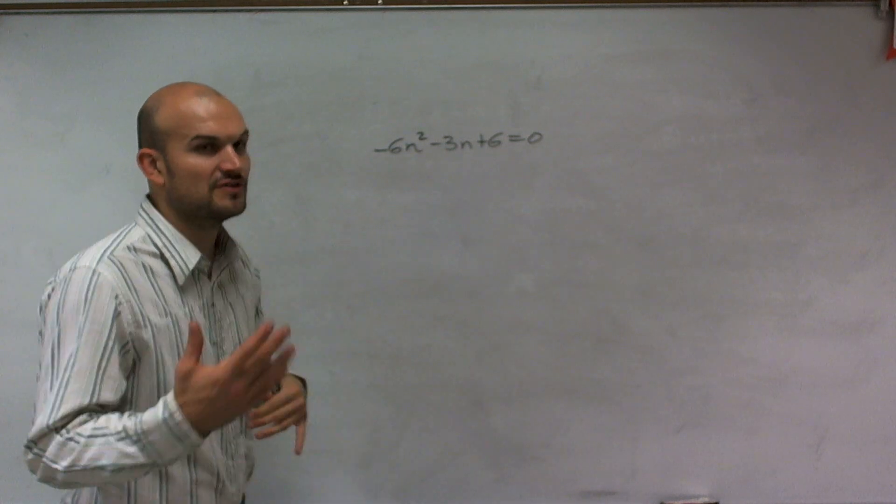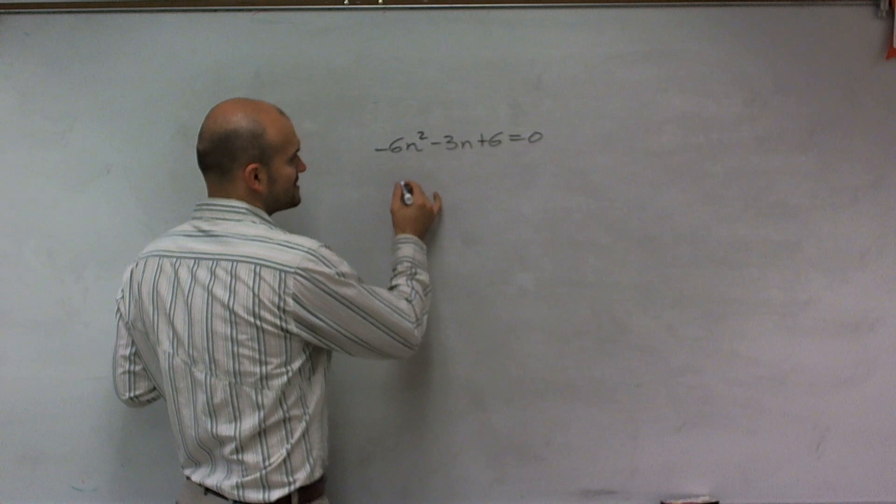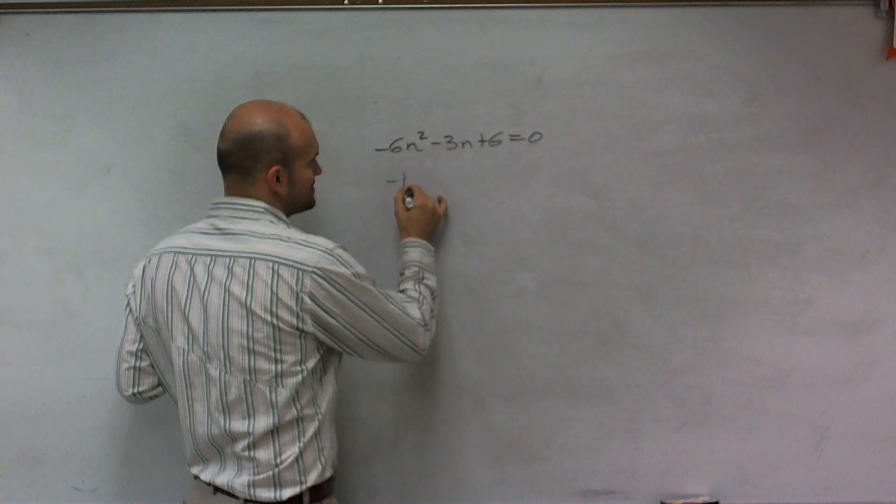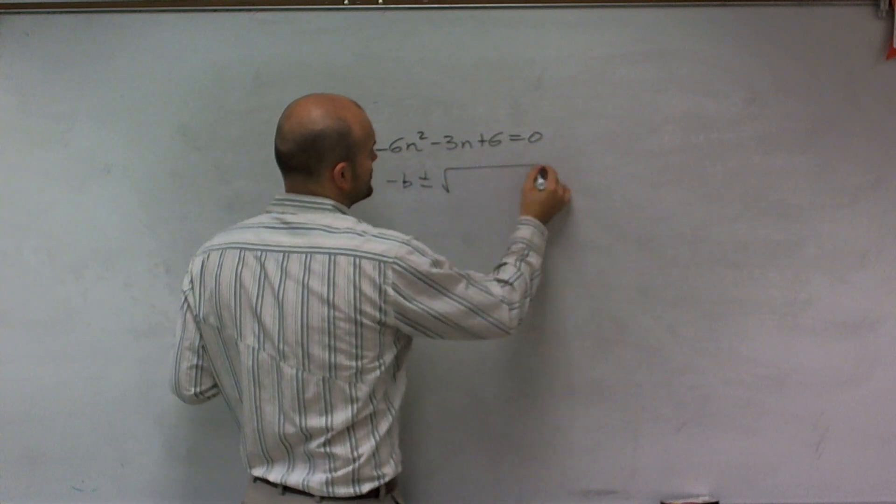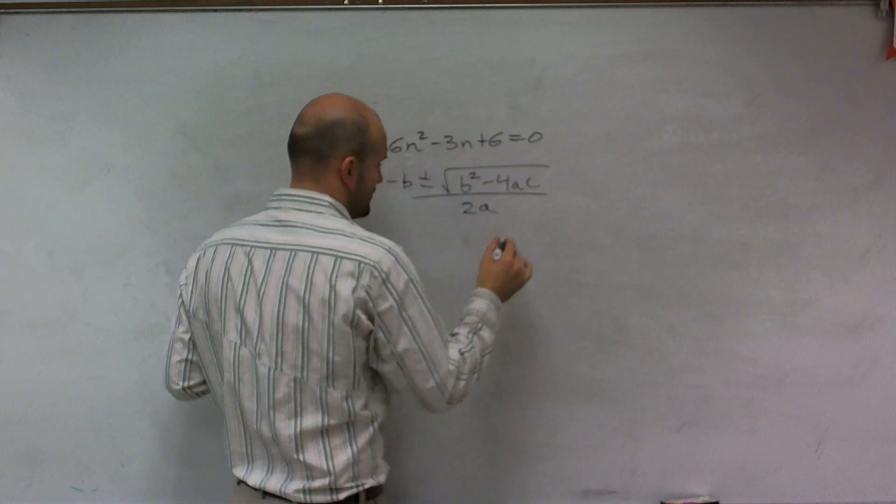So let's take a look at it. First, let's remind ourselves what exactly the quadratic formula is. The quadratic formula says: negative b plus or minus the square root of b² - 4ac all over 2a.